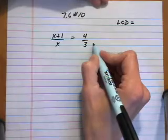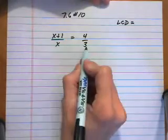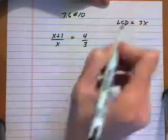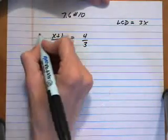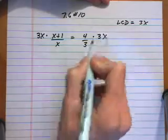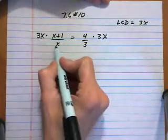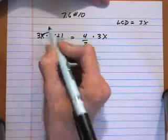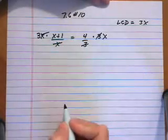So that's the approach I'm going to use here. The LCD for the given denominators of 3 and x would be 3x. So we're going to multiply both sides of the equation by the LCD and then cancel. The x on the bottom cancels with the x, and on the right side the 3 and 3 cancel out.